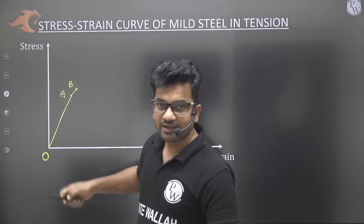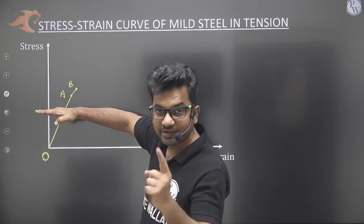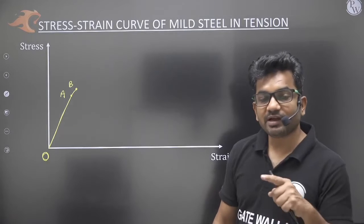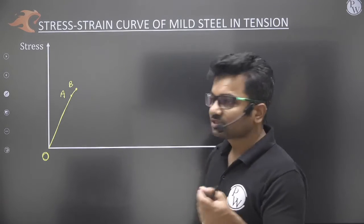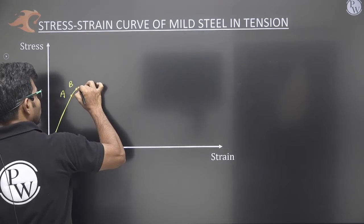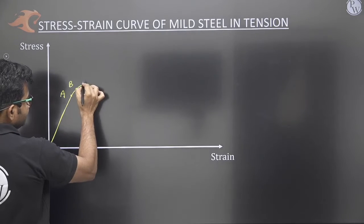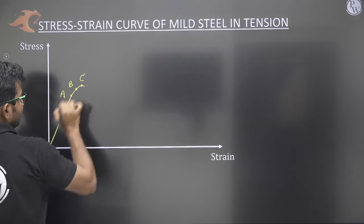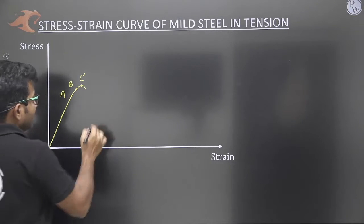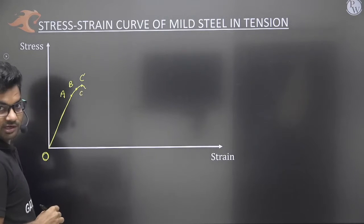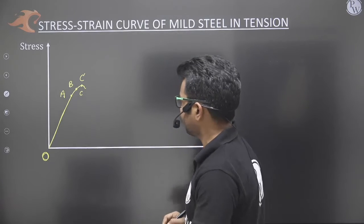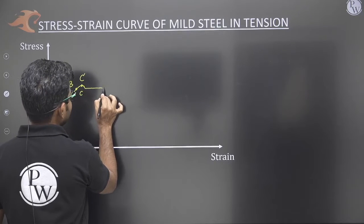Up to point B, any applied stress upon removal allows the material to regain its original dimensions. But after point B, the material will not recover — it will have some permanent deformation. Continuing to increase the load, the stress strain curve rises to a maximum point called C dash, which is the upper yield point. After that there is a slight dip to point C, called the lower yield point. After this, the yielding of the mild steel specimen starts and we get a straight horizontal line.